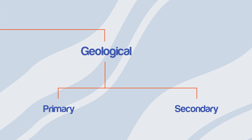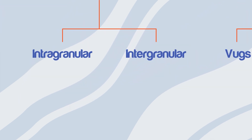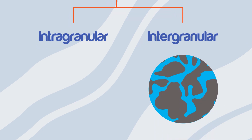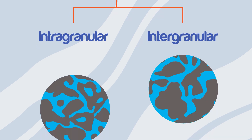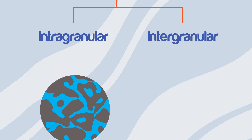Primary porosity is the original porosity that develops during the deposition of the material. Primary porosity can be either intergranular or intra-granular porosity. Intergranular porosity is the porosity between grains, while intra-granular porosity is the porosity within grains itself.